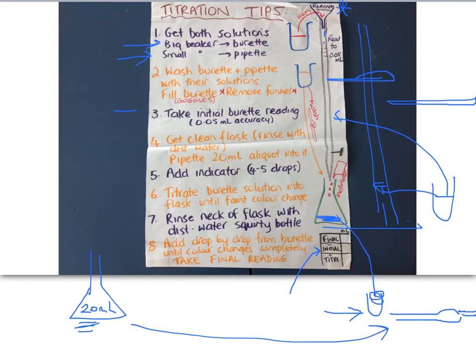Then you add an indicator to that 20 mils, as I said on the previous slide. And then you're going to do your titration where you're adding drop by drop stuff from your burette.